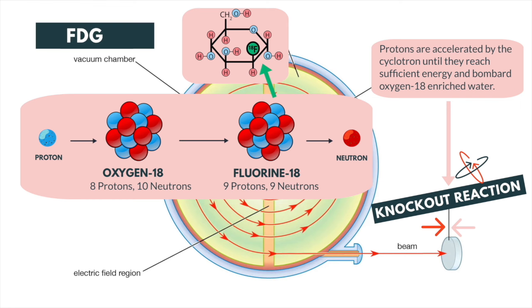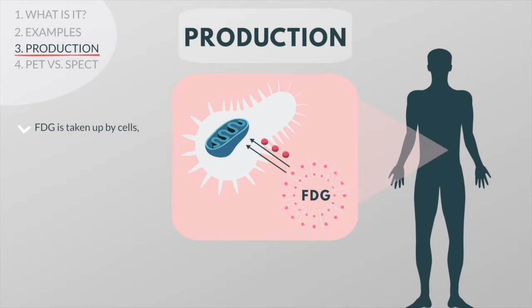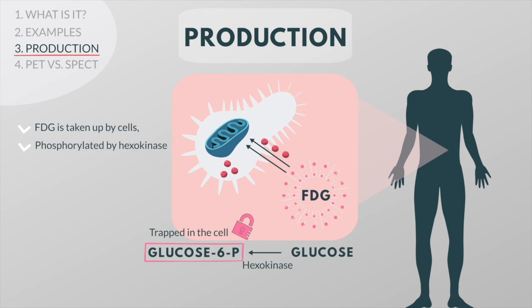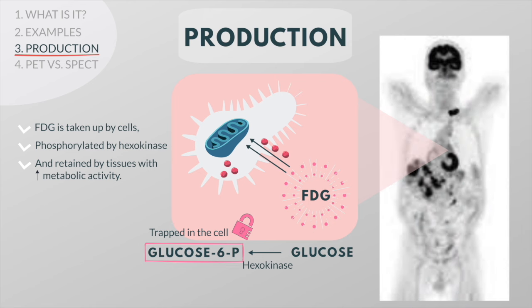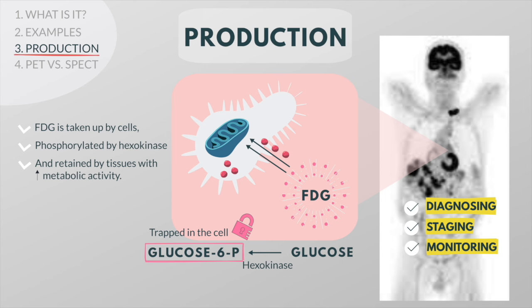FDG is primarily used for imaging tumors in oncology. FDG is taken up by cells, phosphorylated by hexokinase, and retained by tissues with high metabolic activity, such as most types of malignant tumors. As a result, FDG PET can be used for diagnosis, staging, and monitoring treatment of cancers.